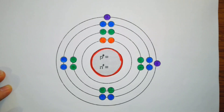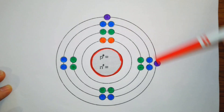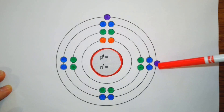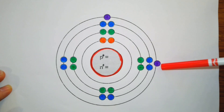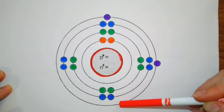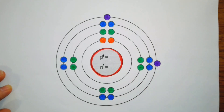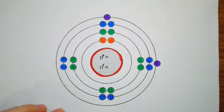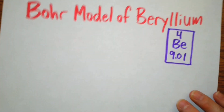This works for everything between hydrogen and calcium. After that second electron, if we add one more then we're going to get into transition metals and they behave a little bit differently. So let's get on to our example of the Bohr model of beryllium.